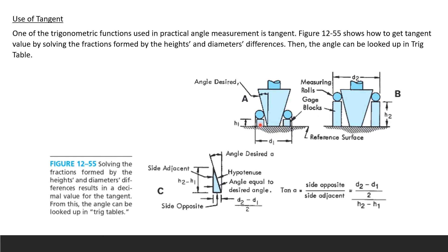This is a pretty detailed setup so you have to go slow. We want to measure this angle, which we call the desired angle. We are going to set up the measurement by using gauge blocks and measuring rods. It is pretty hard to measure the angle, so your setup has to be right. The distance from one side to the other is D. The height from the reference surface to the rod is H1, and the height from the reference surface on the other side is H2. The distance from here to there is D2.